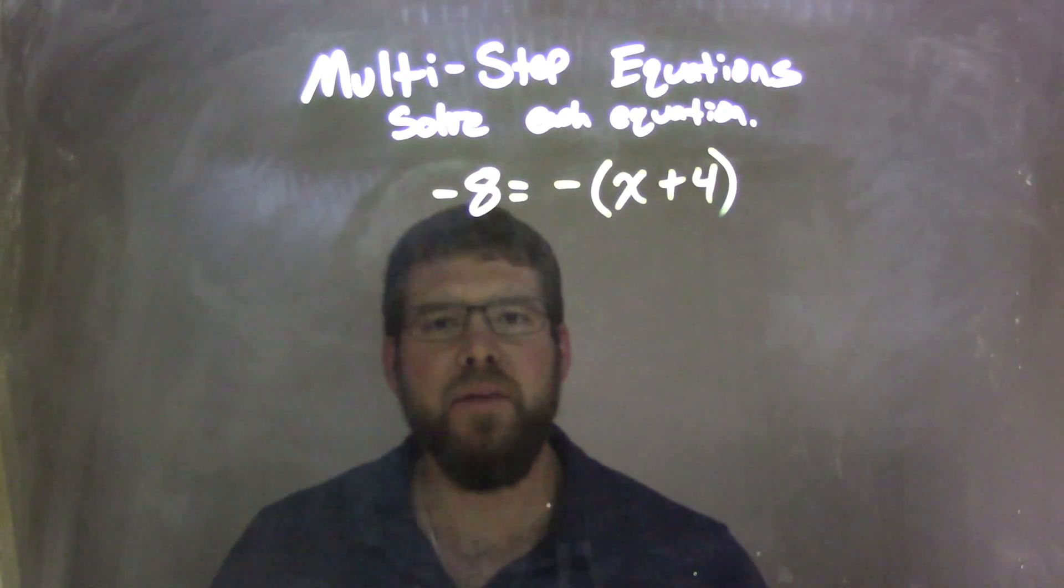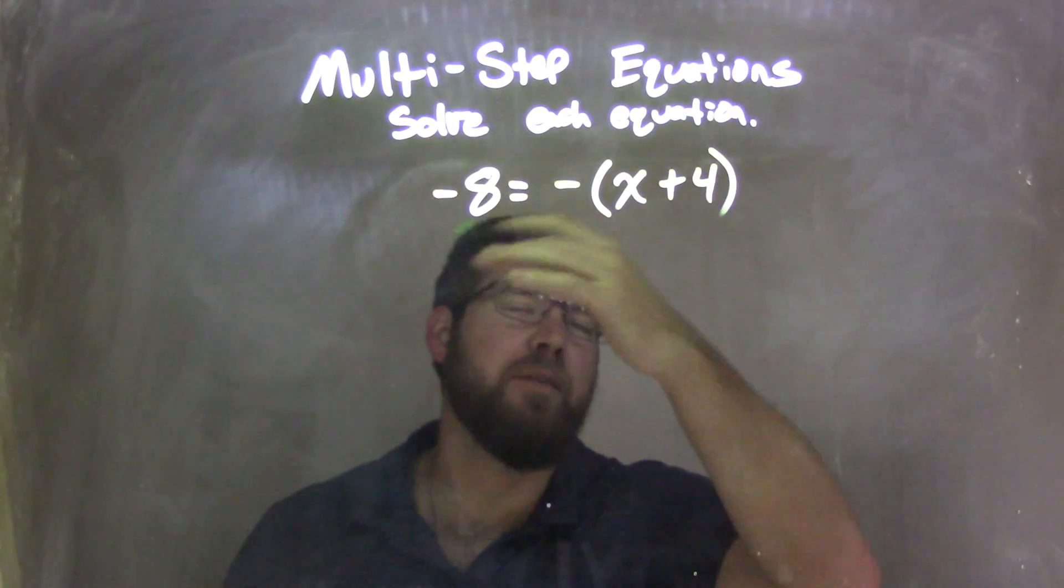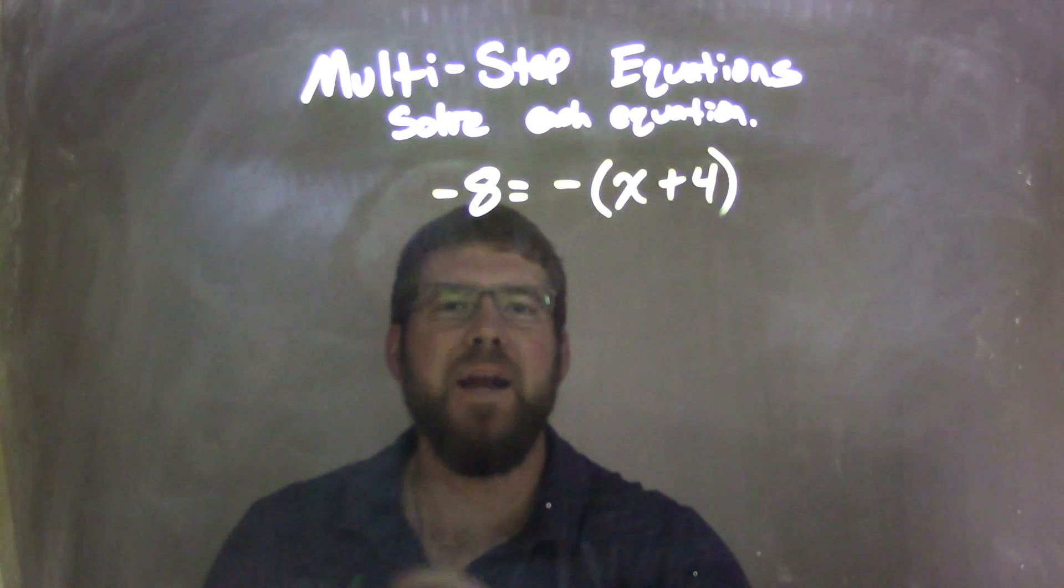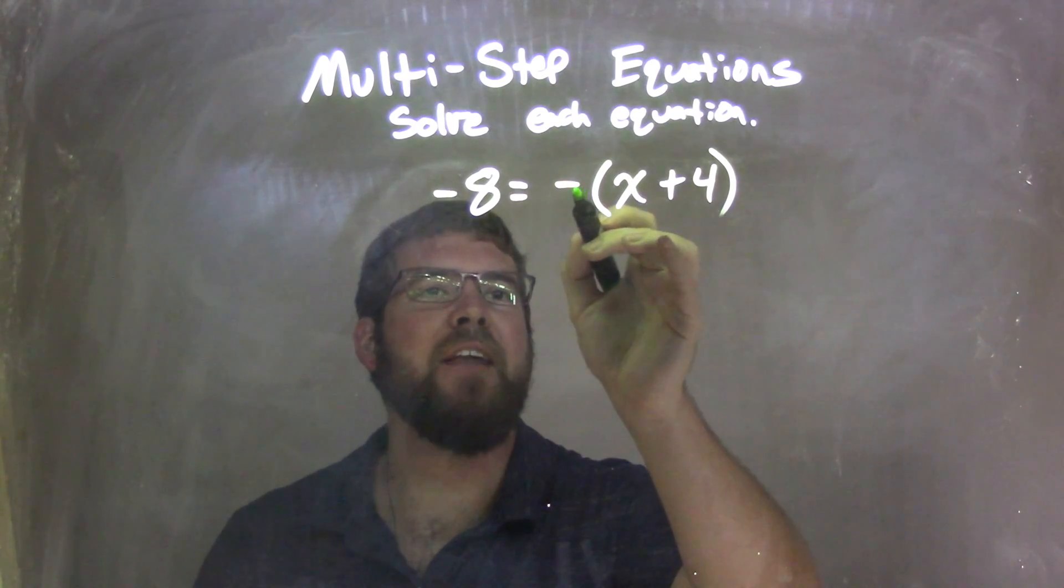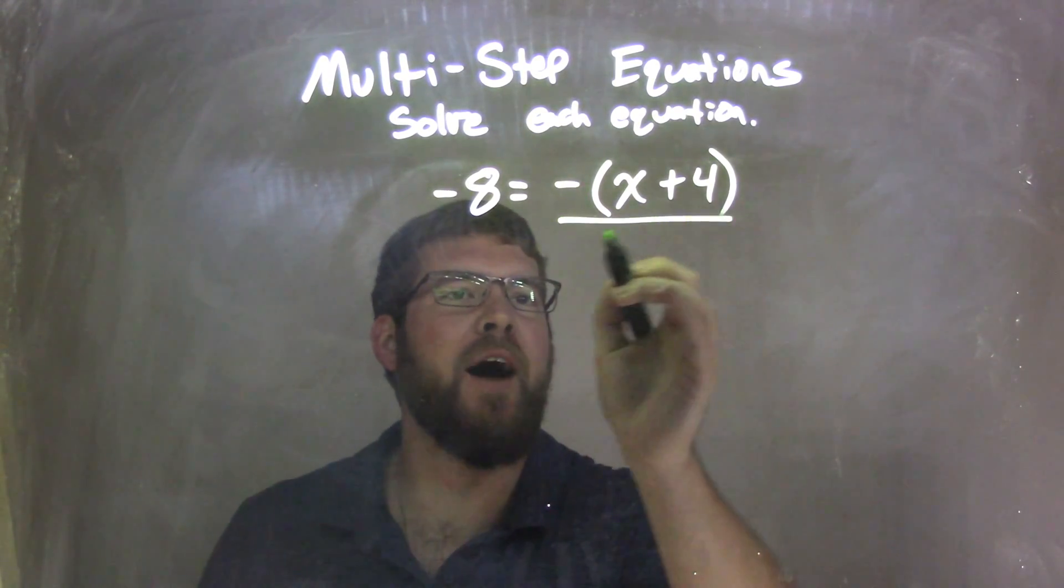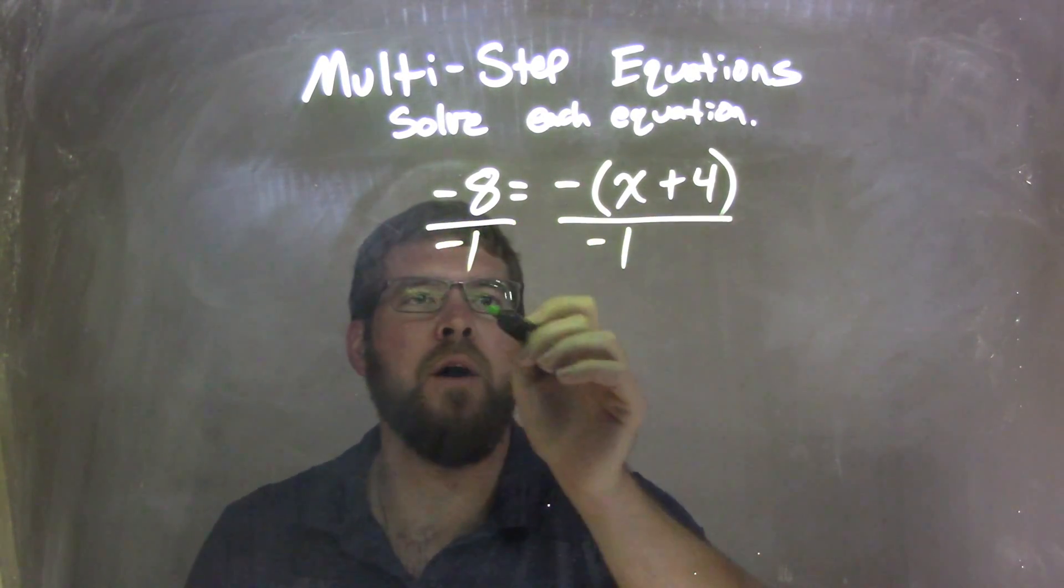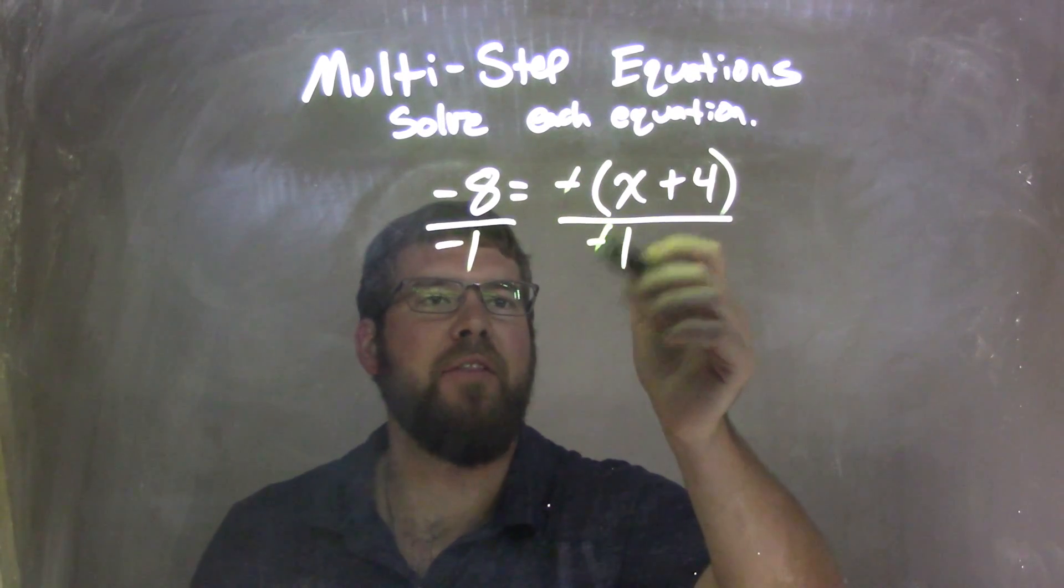Well, normally I would want to distribute that negative inside the parentheses and go from there, but I'm going to actually skip that step. I'm going to kind of work backwards. That negative outside is a negative 1, so if I divide both sides by negative 1, I can eliminate that negative.